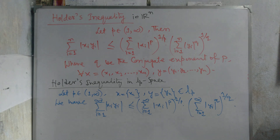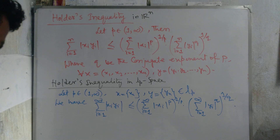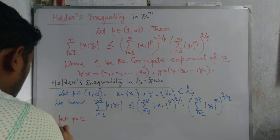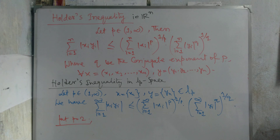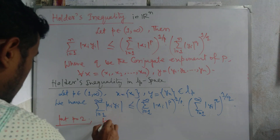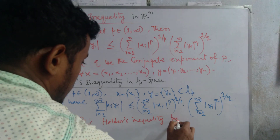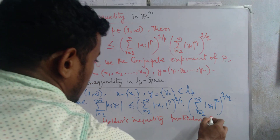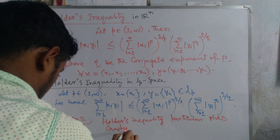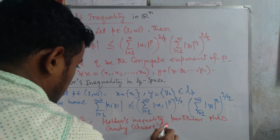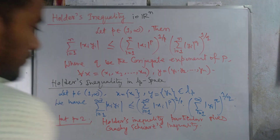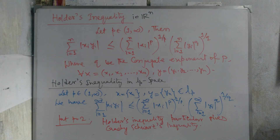We are not going to prove all of these today. We will first prove Young's inequality, then use it to prove Cauchy-Schwarz inequality and Hölder's inequality. Note that if we put p = q = 2 in Hölder's inequality, it becomes the Cauchy-Schwarz inequality. So Hölder's inequality in particular gives Cauchy-Schwarz inequality. Today we stop here.